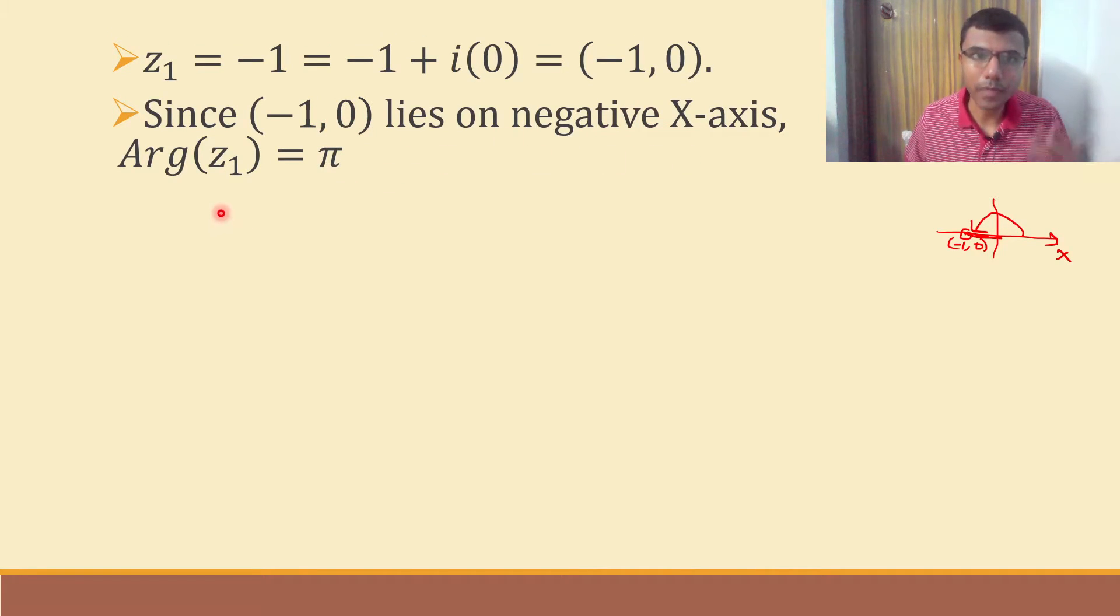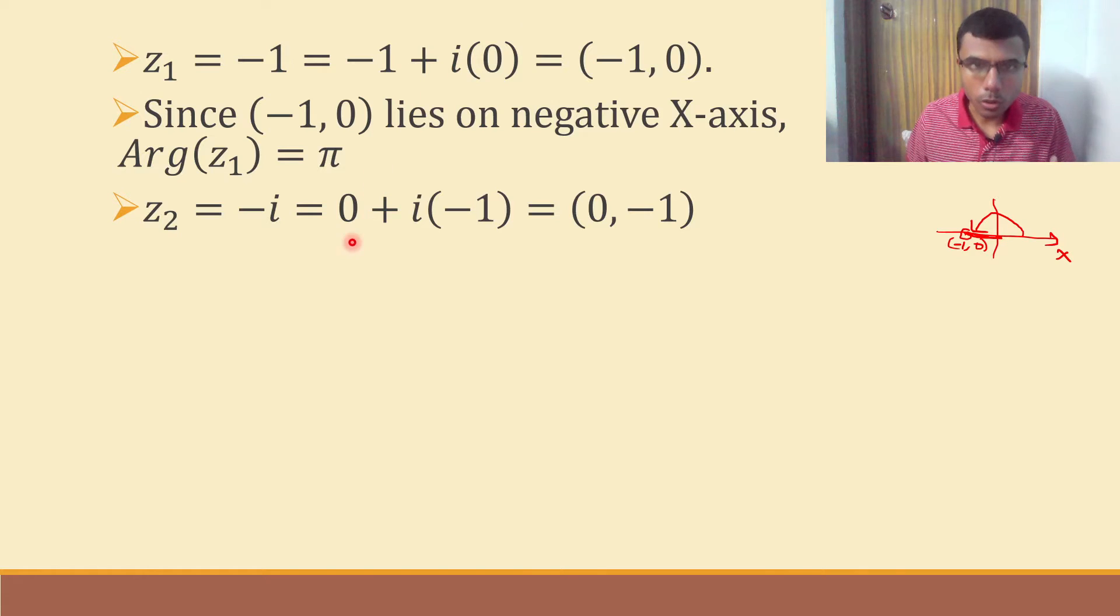Now let's come to the next complex number. Next we are given z2 as minus i. Minus i I can write it as 0 plus i into minus 1. Minus i can write it as i into minus 1, and I just wrote 0. Now this I can write it as 0 comma minus 1.